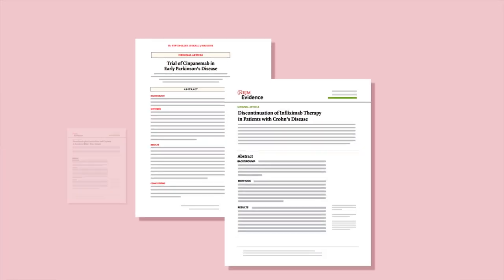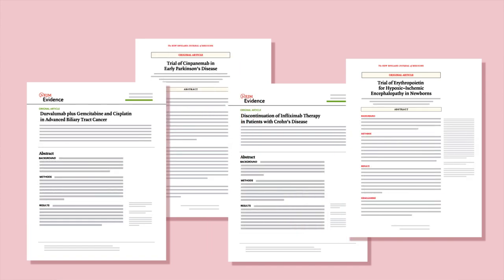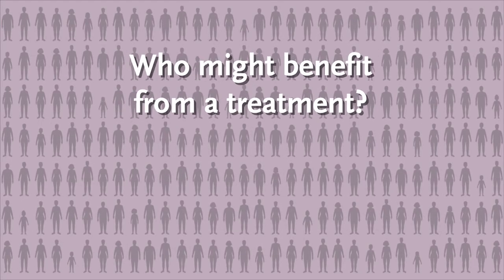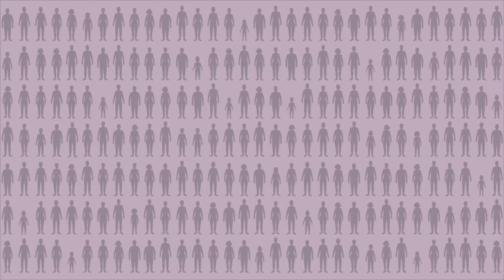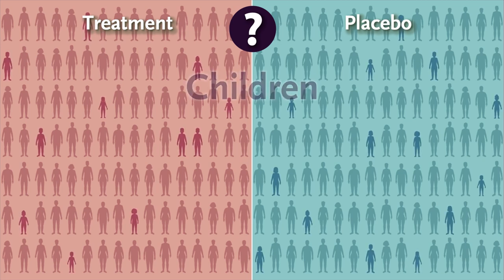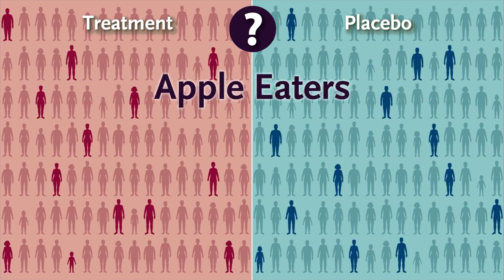Well-designed, randomized, controlled trials can generate reliable data to answer clinical questions. But they're time-intensive and often come with hefty price tags. To learn as much as possible about who might benefit from a treatment, investigators often examine treatment effects in different subsets of trial participants — perhaps based on age, baseline blood pressure, or even the type of fruit consumed daily. But these subgroup analyses should be approached with caution. Let's talk about a few specific reasons why.